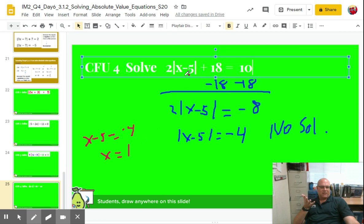Let's test it. Let's check it. See if it works. One minus five is negative four. Absolute value negative four is four. Four times two is eight. Eight plus 18 is 26. Is 26 equal 10? No good.